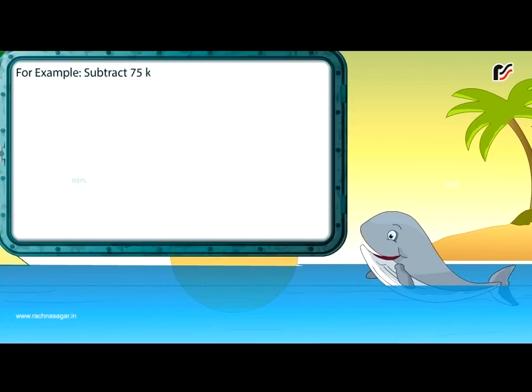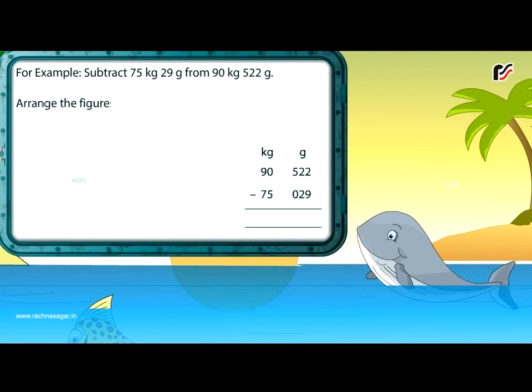For example, subtract 75 kg 29 g from 90 kg 522 g. Arrange the figures in kilogram and gram columns respectively.